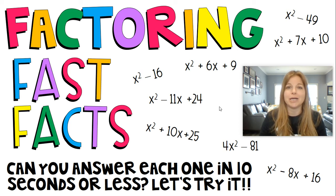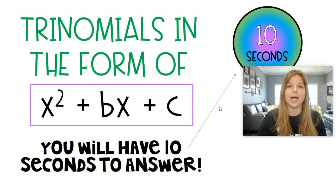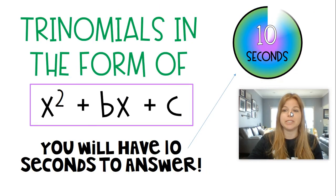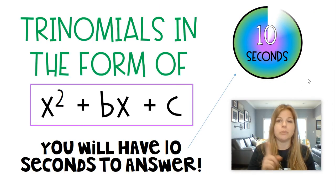Otherwise, play along with me and see how you do and then see if you can watch it again and do even better. Okay, so the first thing that we're going to be factoring are trinomials in this form of x squared plus bx plus c. Very simple, a is just one.